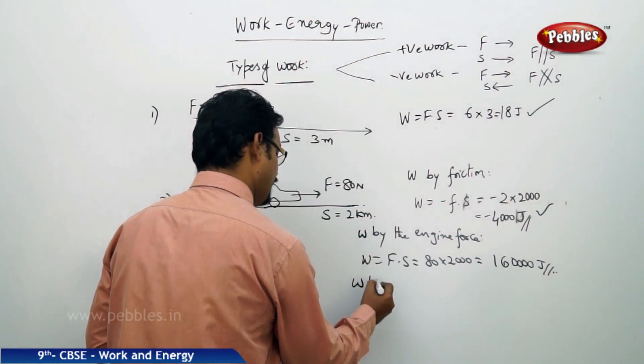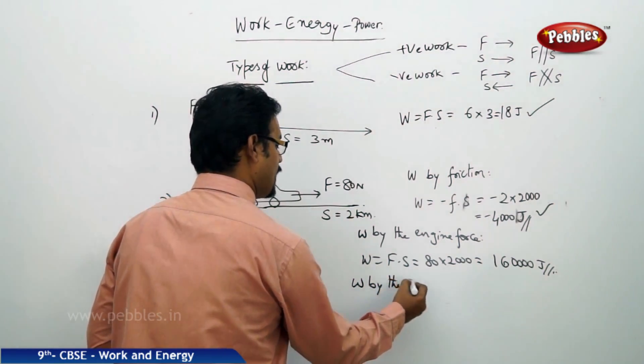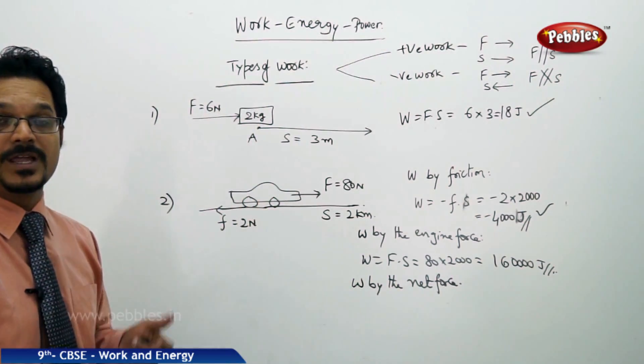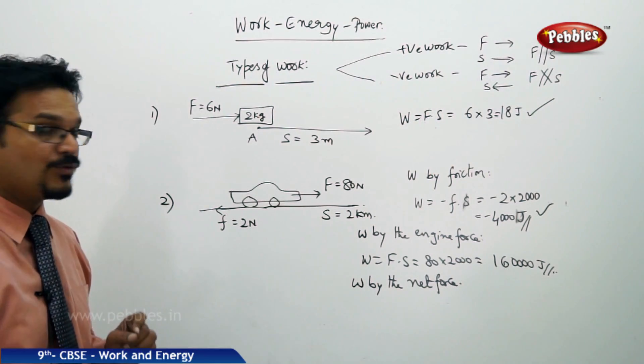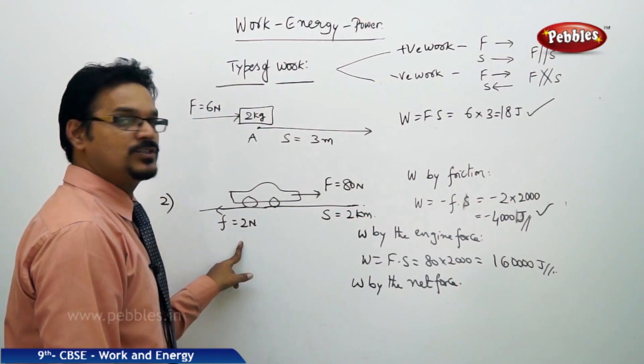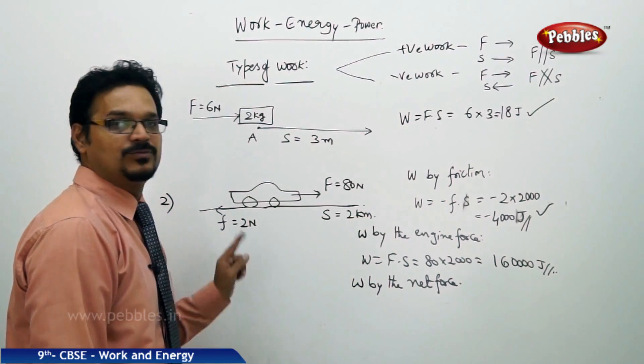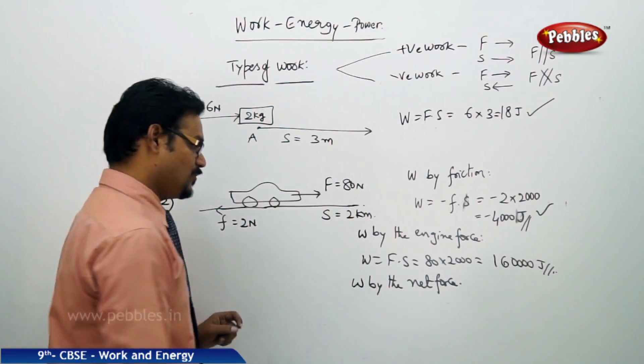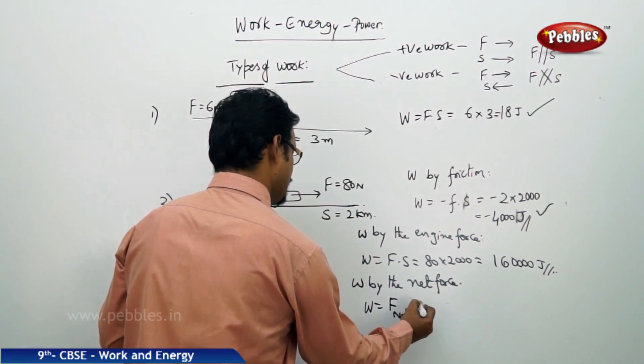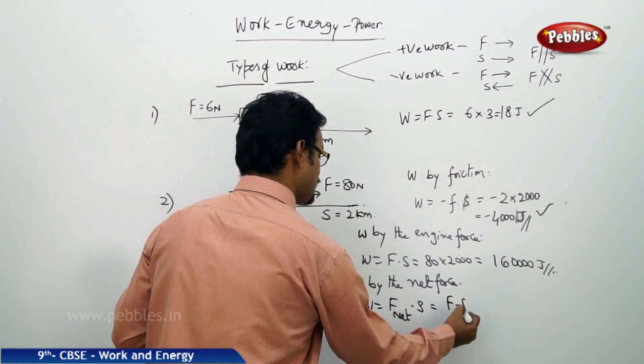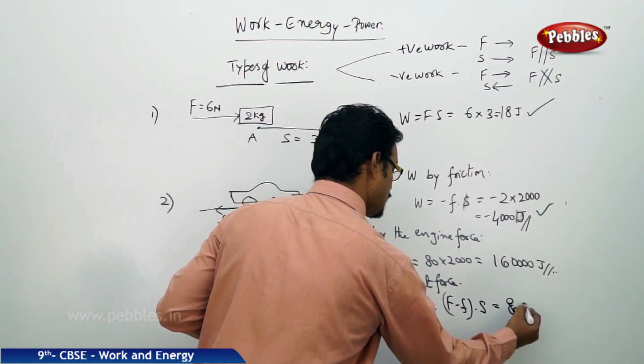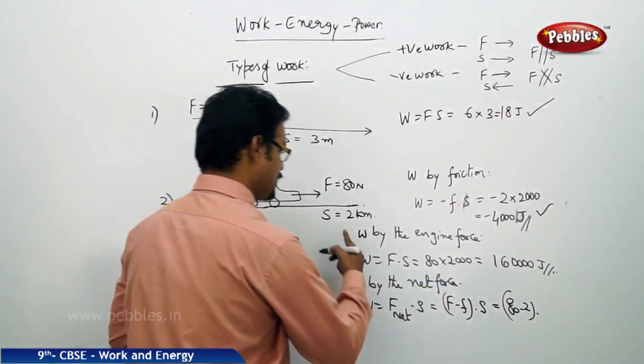Now if you ask the question, see how different questions can be asked: work done by the net force. Net force we discussed in the previous chapter. That net force is the resultant of the forces. So one force is 80 Newton, other force is 2 Newton. The net force is 80 minus 2, 78 Newton. So W equals to force net into displacement. Force net is F minus small f into S.